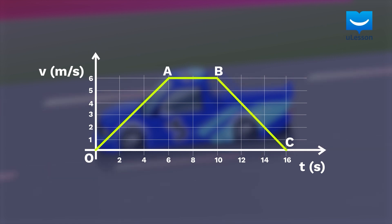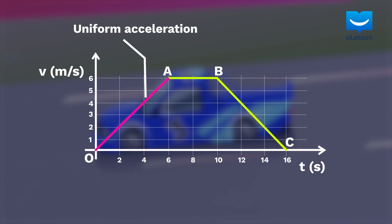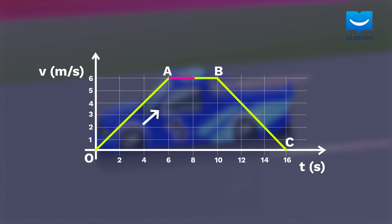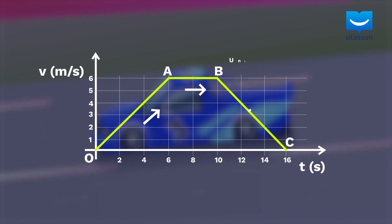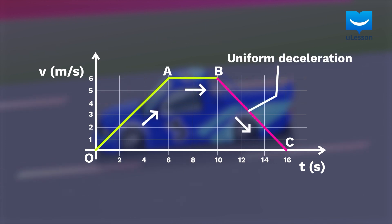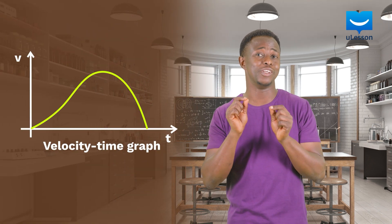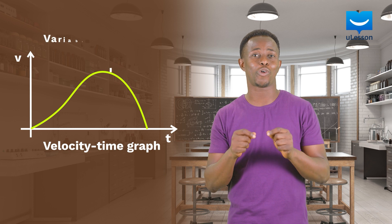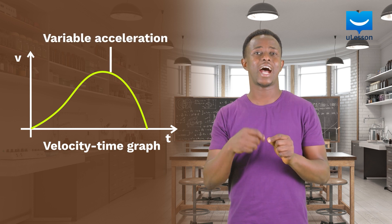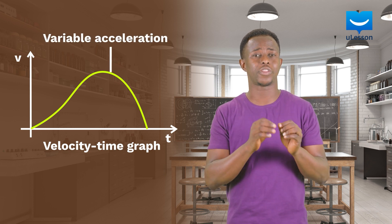Therefore, we can say that during uniform acceleration, the velocity-time graph slopes upward. During uniform velocity, it stays flat, and during uniform deceleration, it slopes downward. Before we go, it is important to know that you can have a kind of motion where the change in velocity is irregular. This is called variable acceleration and it appears as a curve on the velocity-time graph.